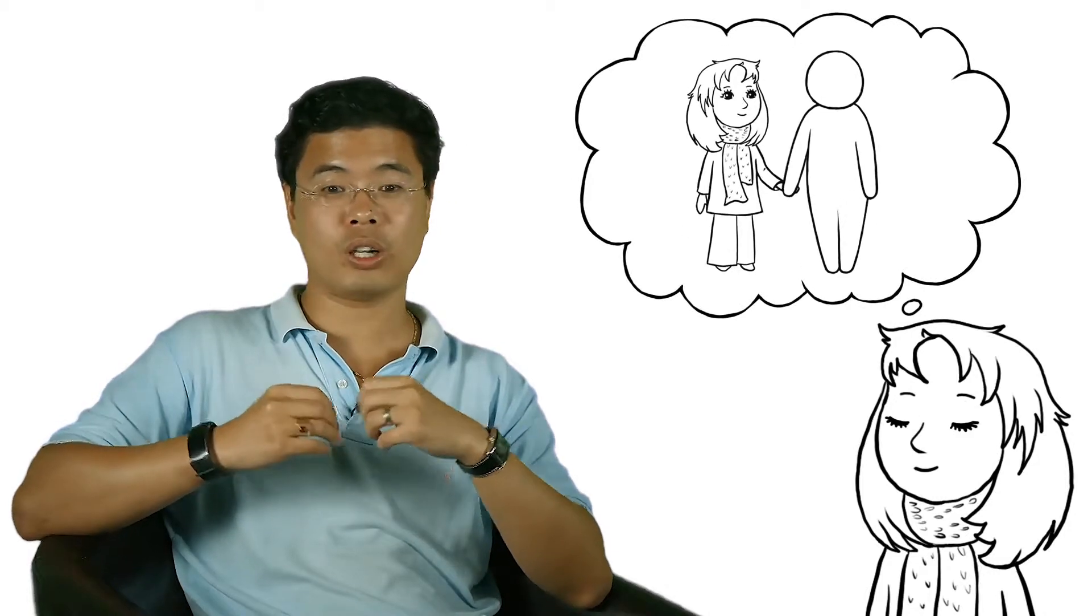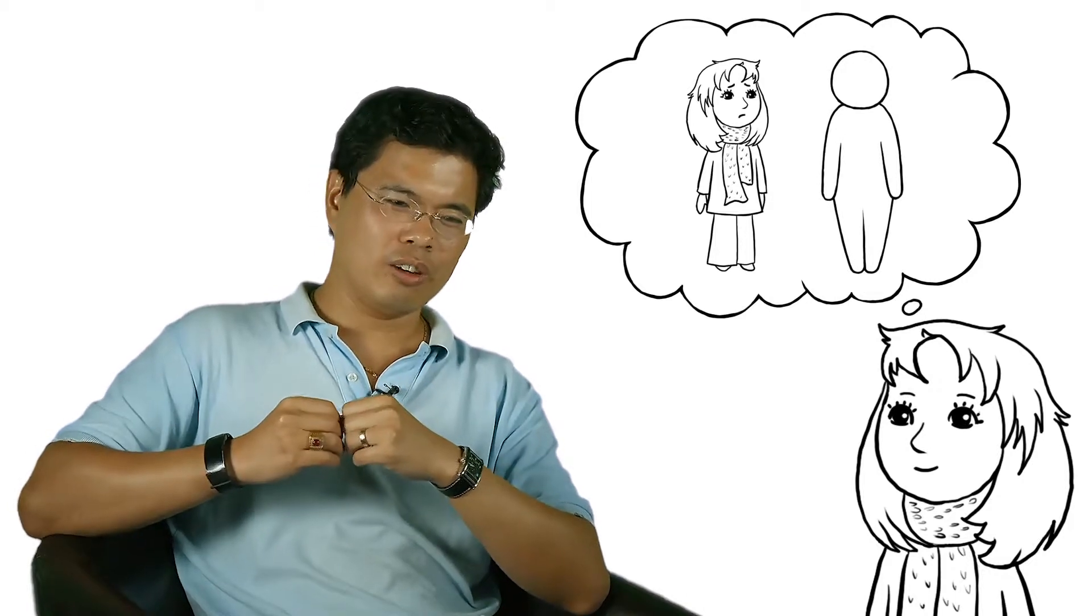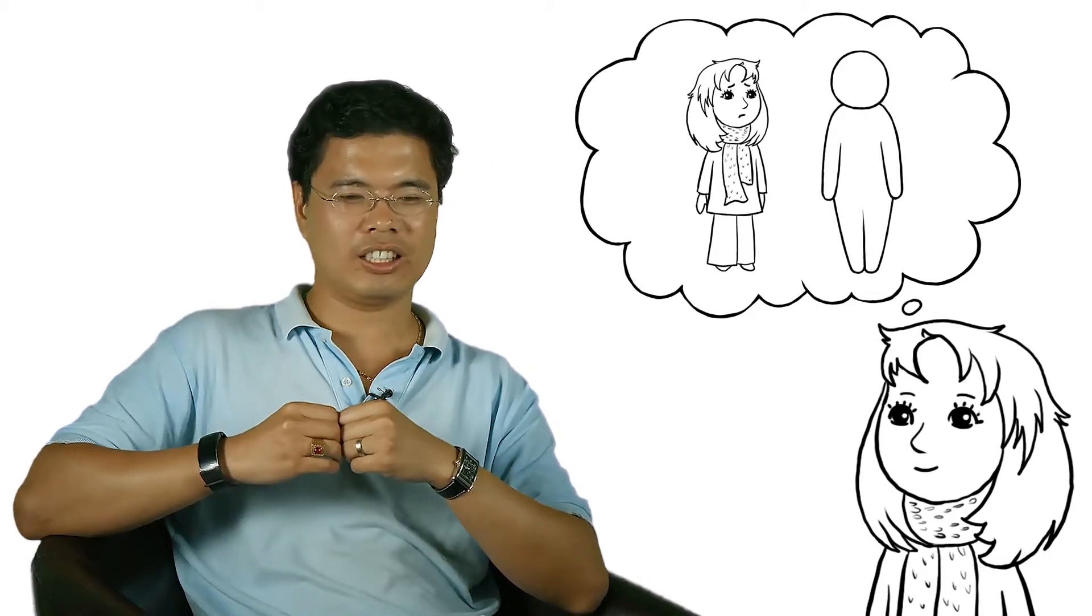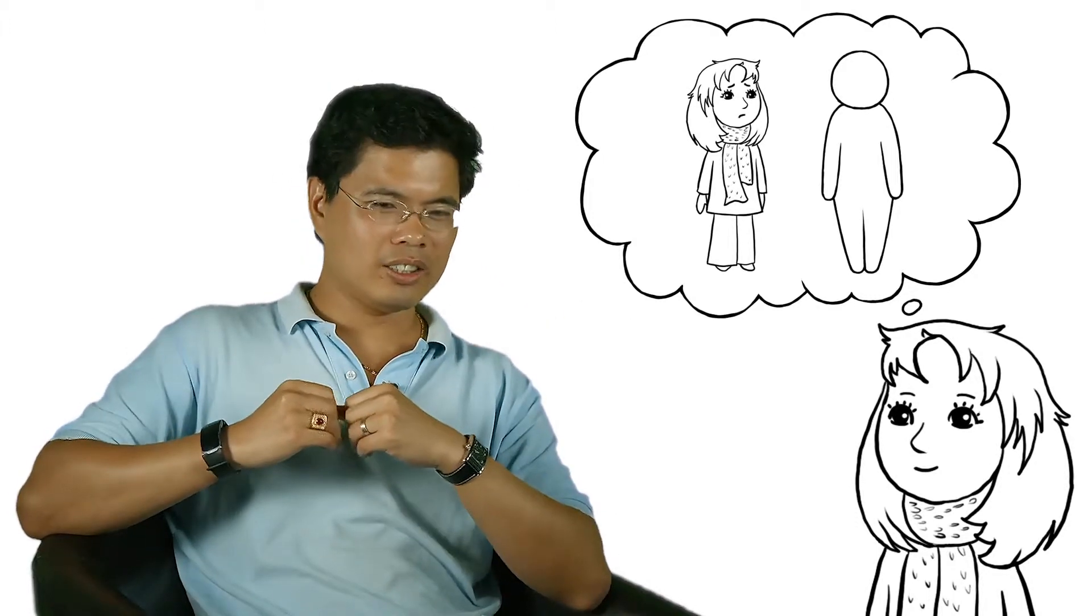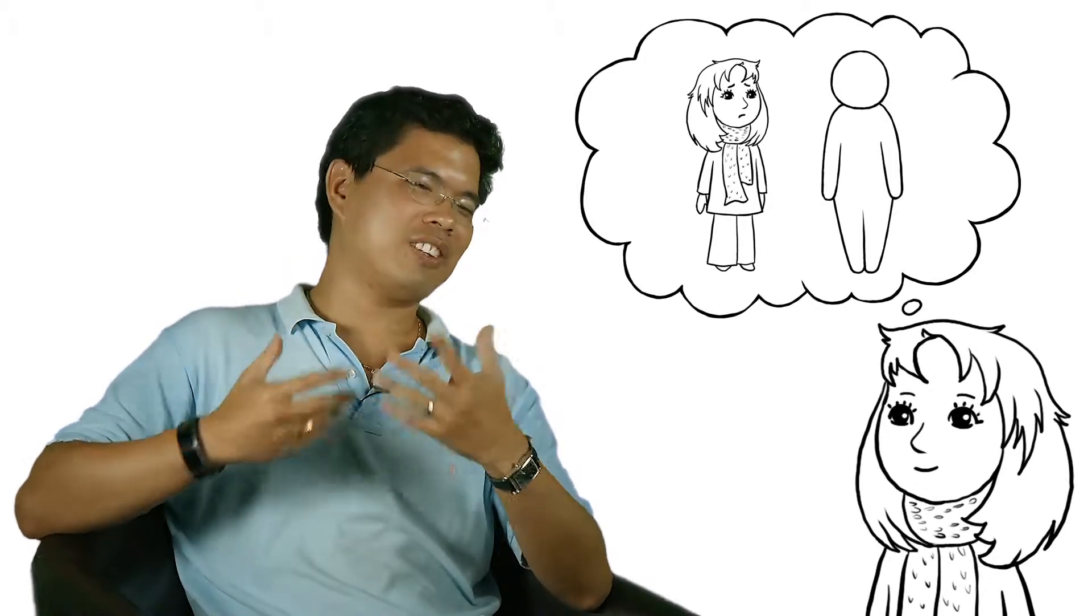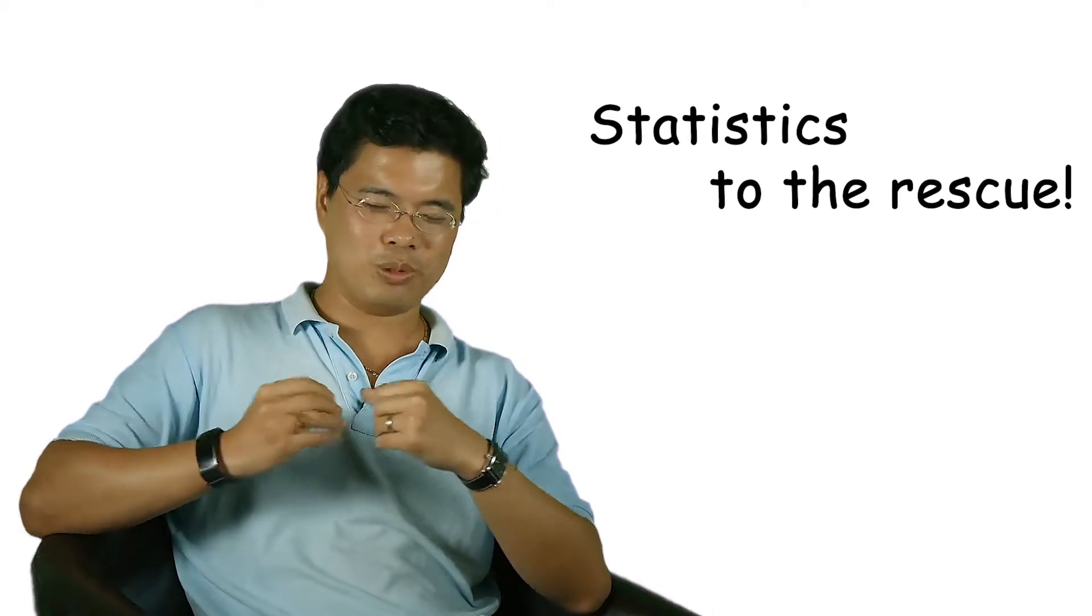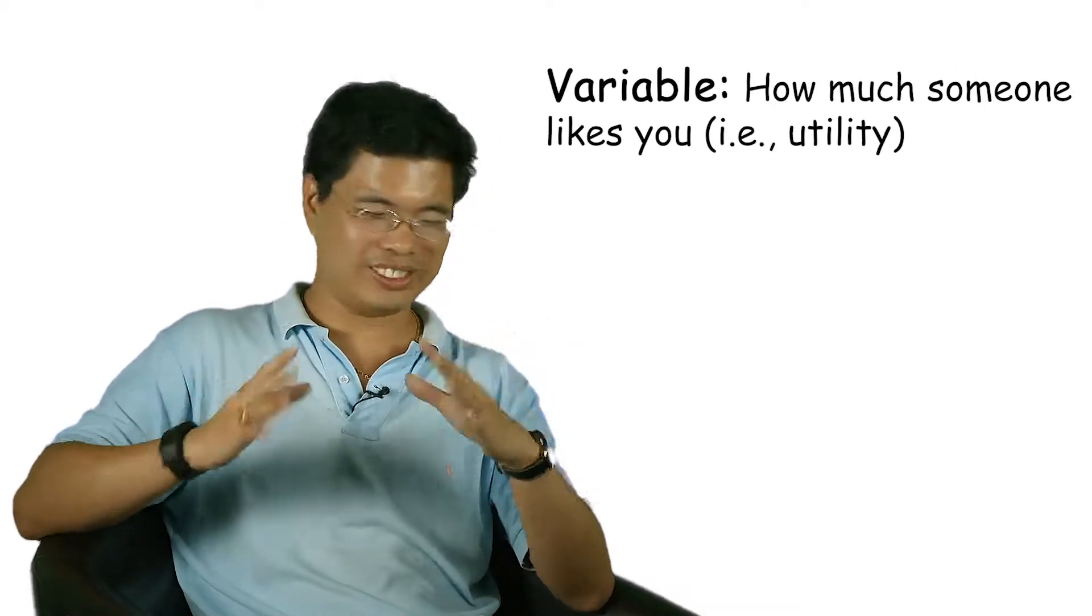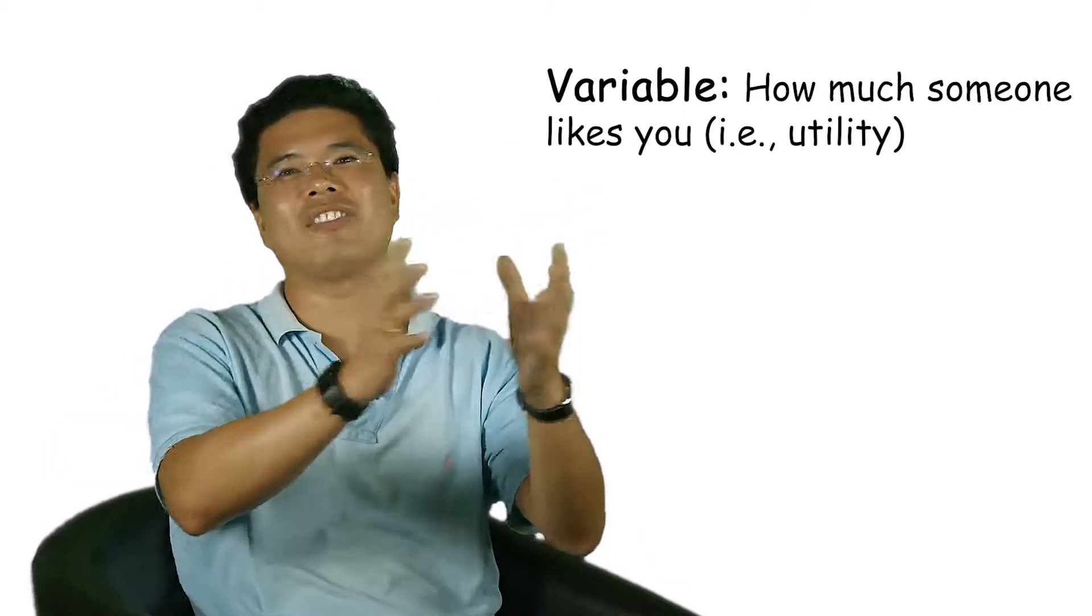We're all young, or at least I was young once, and you're probably at that stage where you're thinking about maybe having your first potential partner and agonizing over whether him or her will actually accept you as a person. We can think about this in a very statistical way. You could have as your variable how much the person likes you—the amount of utility.